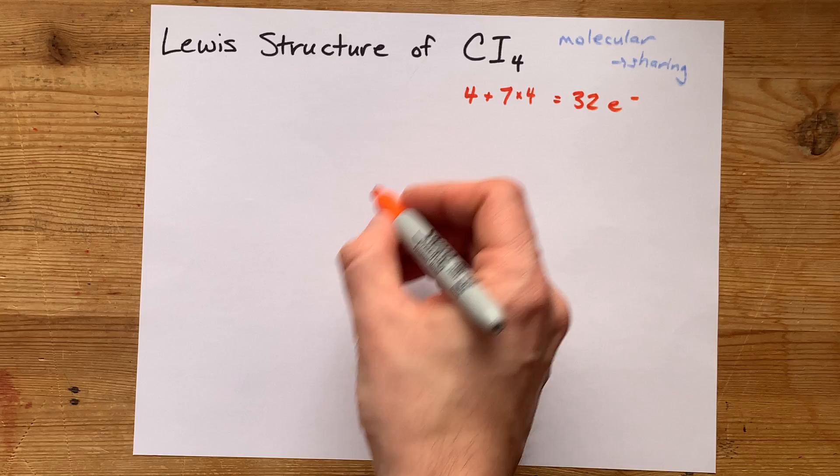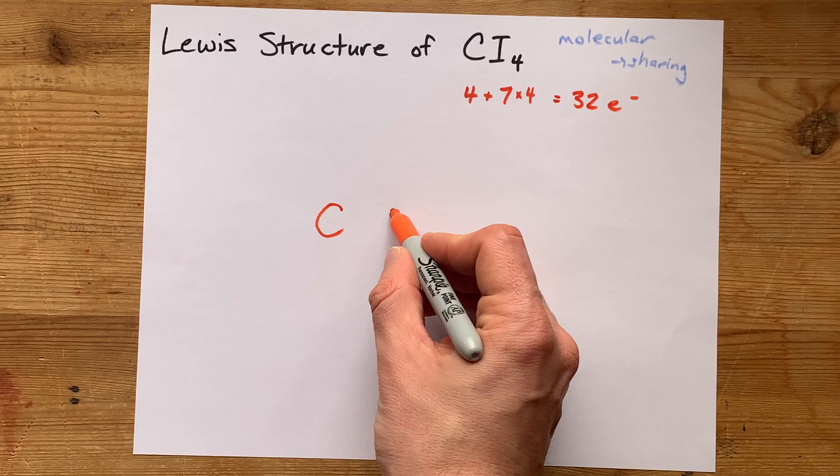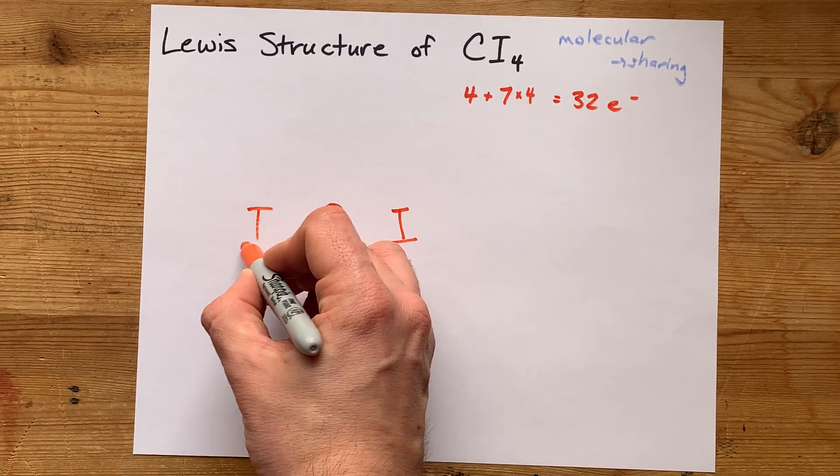Now I'm going to put my carbon in the center because it can make more bonds than an iodine can, and I'm going to put my four iodines in a circle around it.